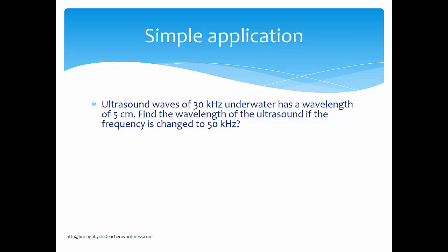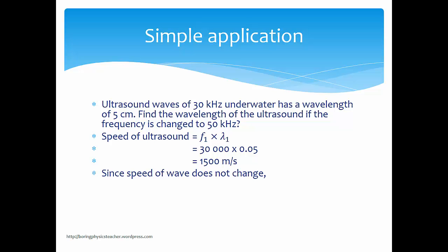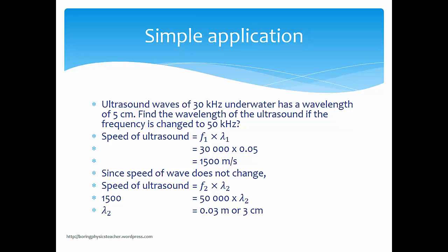Ultrasound waves of 30 kHz underwater have a wavelength of about 5 cm. Find the wavelength if the frequency is changed to 50 kHz. First, find the speed of ultrasound: frequency times wavelength = 30,000 × 0.05 = 1,500 m per second. Since the speed of the wave doesn't change, substitute 1,500 = 50,000 × new wavelength, and you should be able to find the new wavelength, which is reduced.